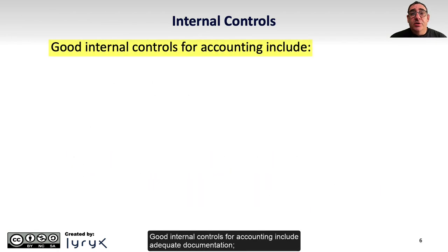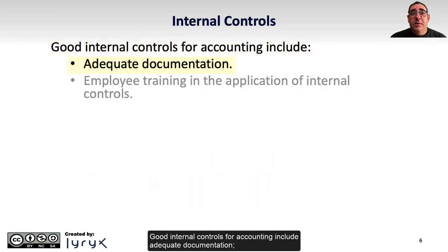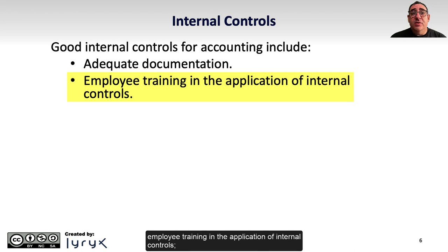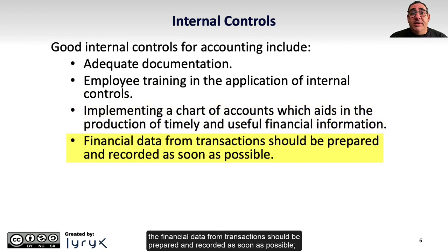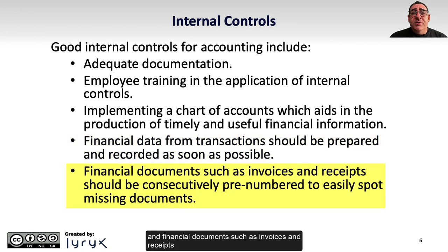Good internal controls for accounting include adequate documentation, employee training in the application of internal controls, and implementing a chart of accounts which aids in the production of timely and useful financial information. The financial data from transactions should be prepared and recorded as soon as possible, and financial documents such as invoices and receipts should be consecutively pre-numbered to easily spot missing documents.